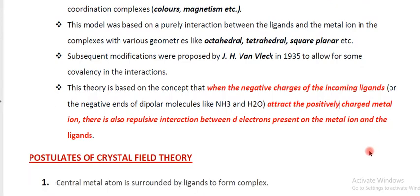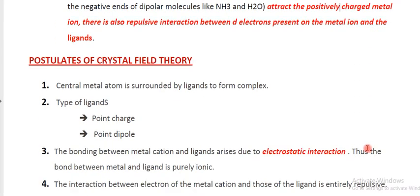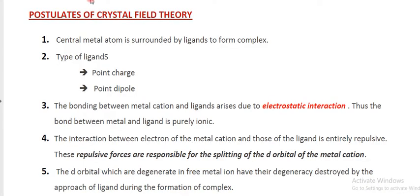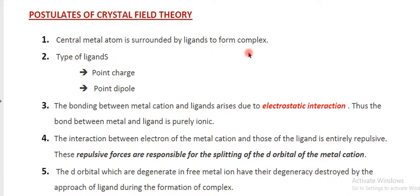We can discuss what are the postulates of this crystal field theory, otherwise called CFT. This theory consists of 9 postulates. The first postulate is that the central metal atom or metal ion in the complex is surrounded by ligands to form the complex. The second postulate is that there are two types of ligands: point charge ligands or point dipole ligands.